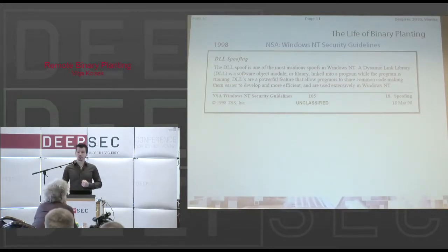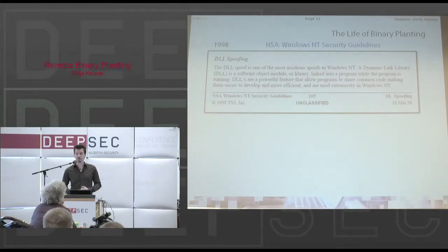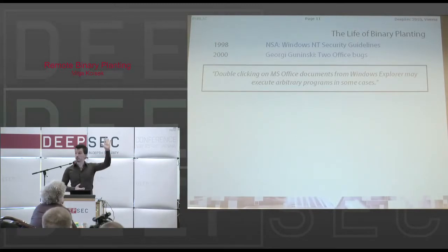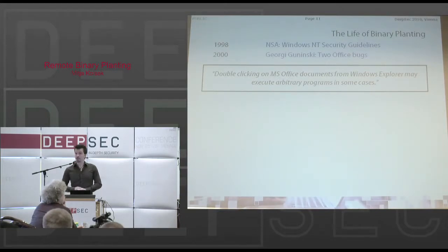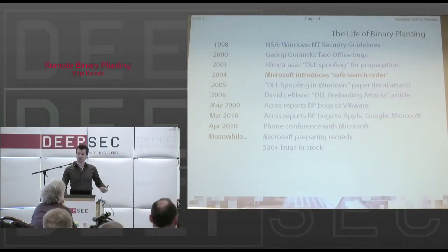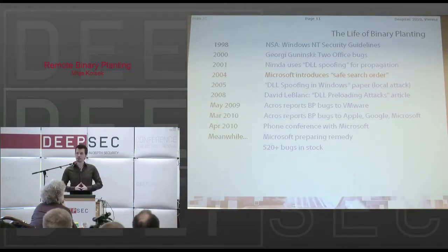12 years ago, the National Security Agency published a paper called Windows Anti-Security Guidelines, which was probably one of the first sources to publicly mention this type of vulnerability — it was called DLL spoofing then. In 2000, Georgi Guninski found two Office bugs of this type and published them, and Microsoft fixed them. But it didn't cause an avalanche, which it could have. A lot has happened since then, and Microsoft introduced some partial fixes to make things a little better, but just a little better, as we'll see.